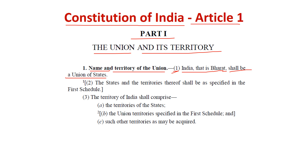So which are our states? Whether it be UP, MP, Rajasthan, or Maharashtra — India is the combined form of these states. And not only states but union territories as well.